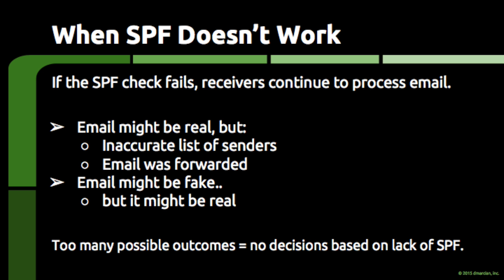If not, the server has to continue processing the email as usual without this link, as any number of things could be going on. The email might be real but the list of senders might not be accurate. Real email might have been forwarded, which means the email could have come from anywhere and therefore the list of allowed senders doesn't help too much. Or the email is fake and unwanted. Too many possible outcomes means it's difficult to attach meaning to the absence of the link that SPF can provide.